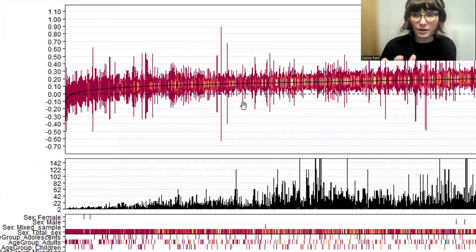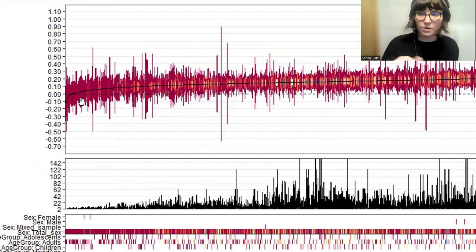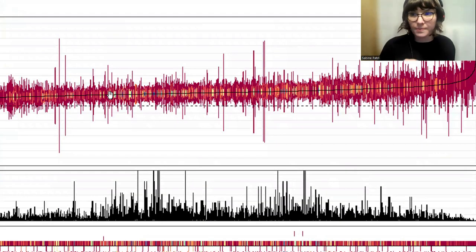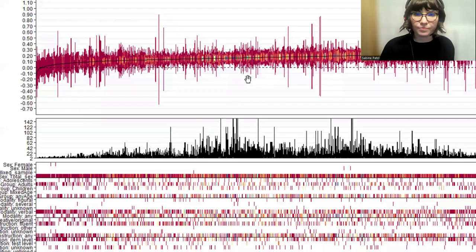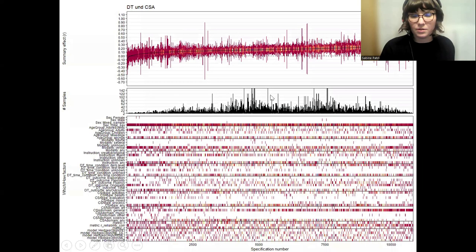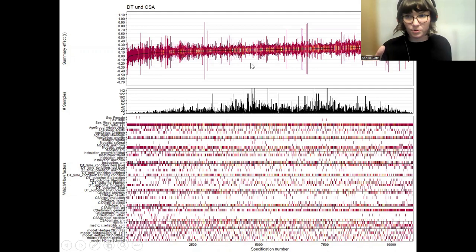We also get information by the colors. Warmer or hot colors represent combinations of which and how factors that only included a few effect sizes, and cooler colors, such as blue or green, represent a combination with more effect sizes. When looking at our graph, you can see that there are a lot of effect sizes in the middle of the plot, and the magnitude doesn't increase a lot. Most of our effect sizes are in the area of 0.1 to 0.2, which basically speaks for the robustness of effect, especially when you're considering all these different possible specifications.